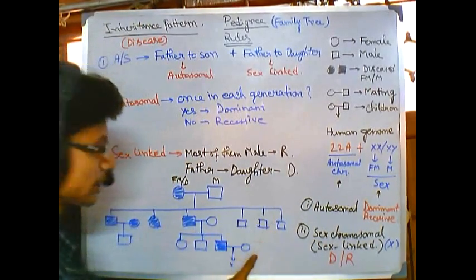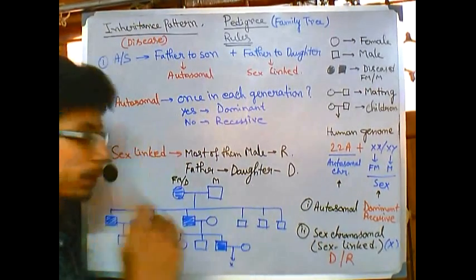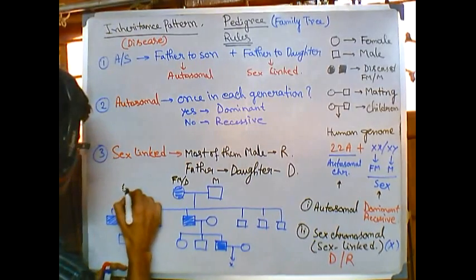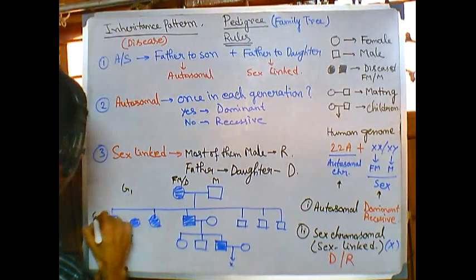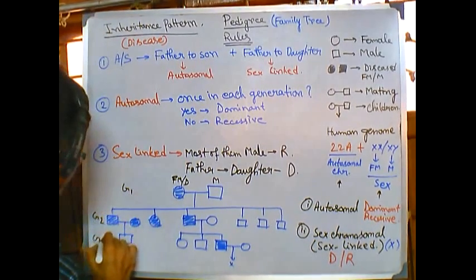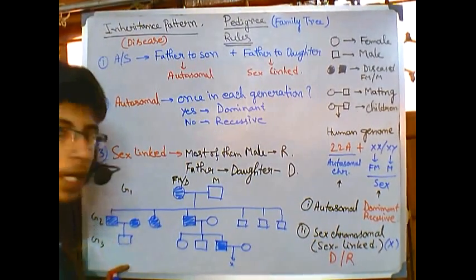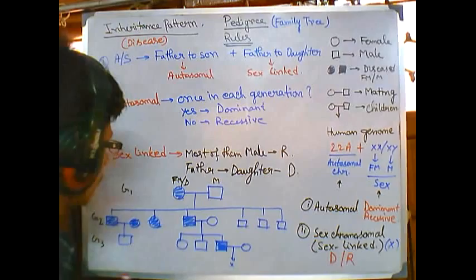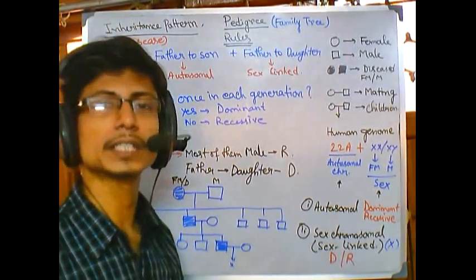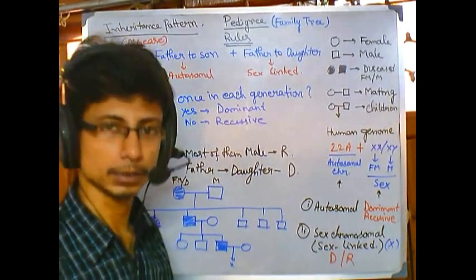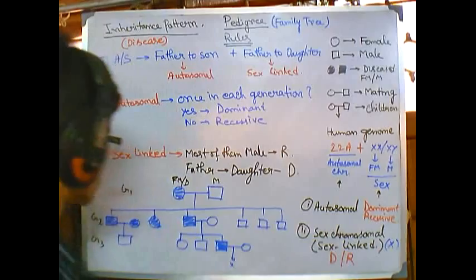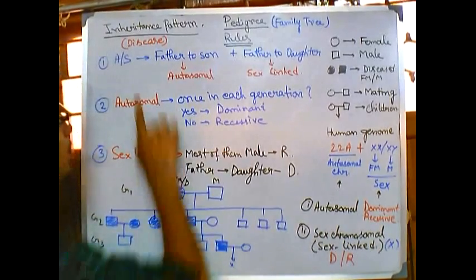This pedigree has three generations: generation one, generation two, and generation three. Problems can be given with five or six generation pedigrees, which are more difficult, but this one is straightforward. First we need to determine whether the trait is coming from father to son or father to daughter.